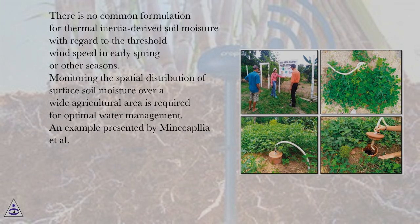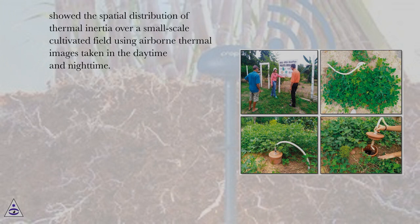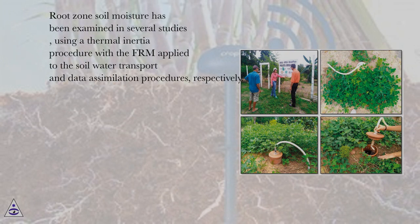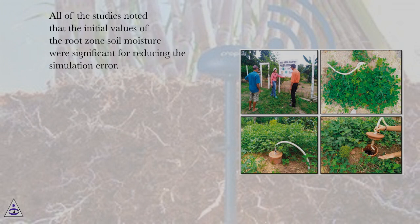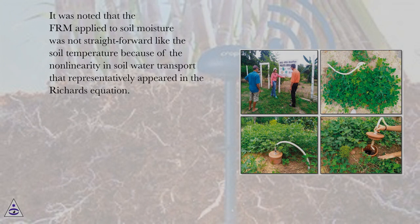Monitoring the spatial distribution of surface soil moisture over a wide agricultural area is required for optimal water management. An example presented by Meinkapja et al. showed the spatial distribution of thermal inertia over a small-scale cultivated field using airborne thermal images taken in the daytime and nighttime. Root zone soil moisture has been examined in several studies using a thermal inertia procedure with a model applied to soil water transport and data assimilation procedures. All of the studies noted that the initial values of the root zone soil moisture were significant for reducing the simulation error. It was noted that the model applied to soil moisture was not straightforward like the soil temperature, because of the non-linearity in soil water transport that representatively appeared in the Richards equation.